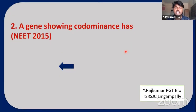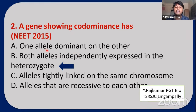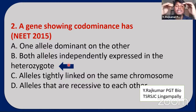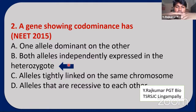Next NEET question: A gene showing codominance has what? Options: one allele dominant over the other; both alleles independently expressed in the heterozygote; alleles tightly linked on the same chromosome; alleles recessive to each other. The answer is both alleles independently expressed in the heterozygote — since both alleles are dominant to each other it is called codominance.